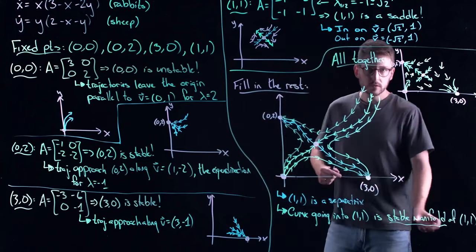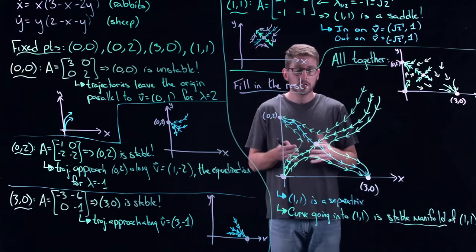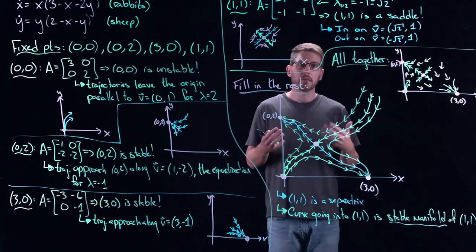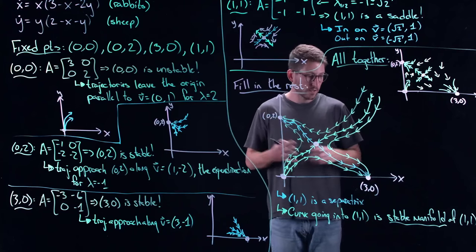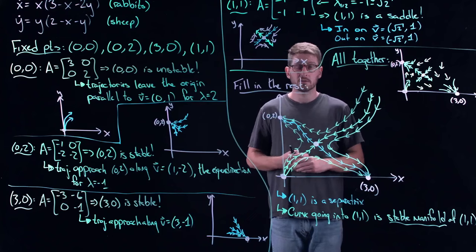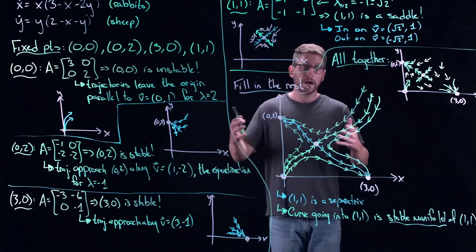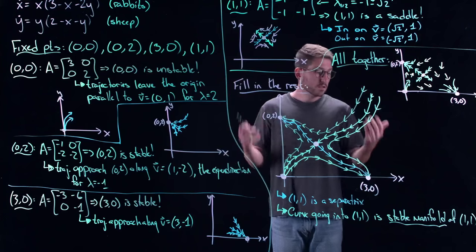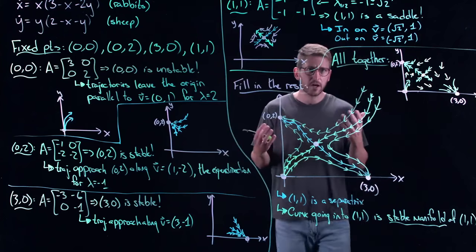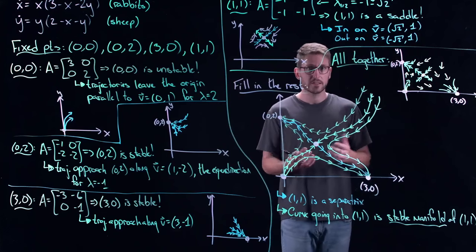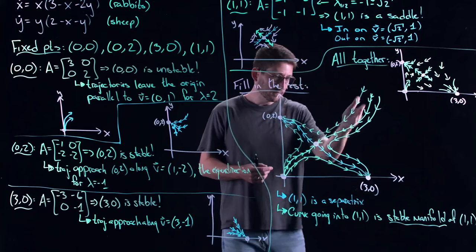That one-dimensional curve you lie along to go into (1, 1) is called the stable manifold. A manifold for our purposes is just curved space — a one-dimensional curved space. A manifold is a generalization of any dimensional space with a little bit of curvature. Spheres, cylinders, lines, planes — basically every mathematical object you're interested in is a manifold. Here you have a little curved line that makes up a manifold.